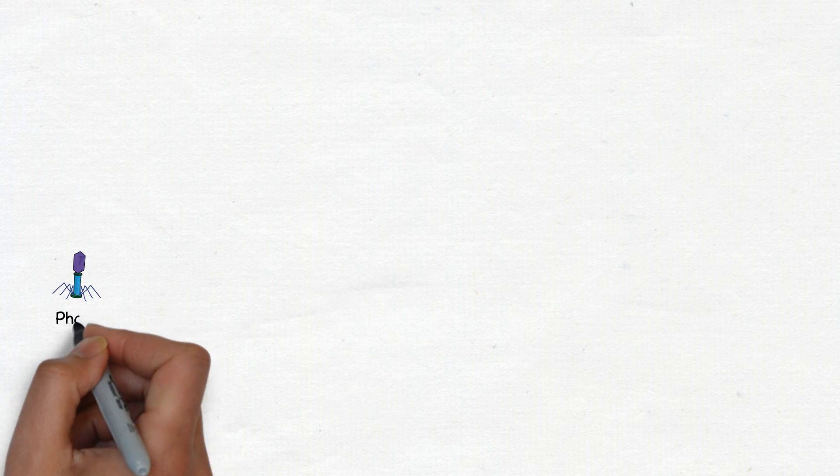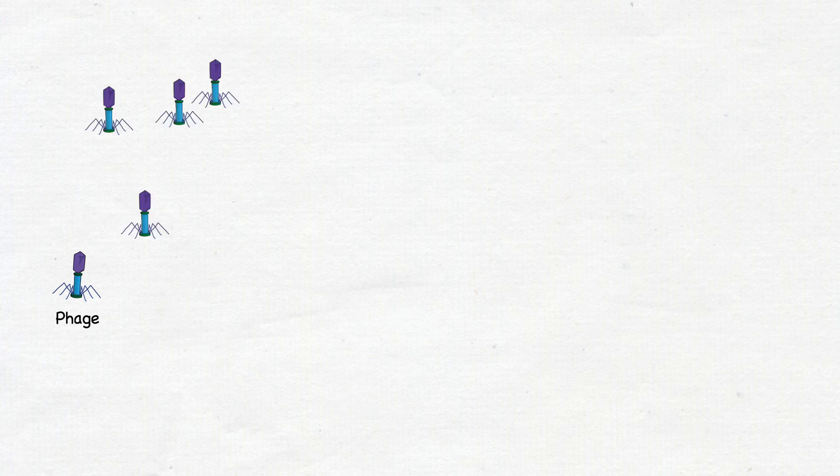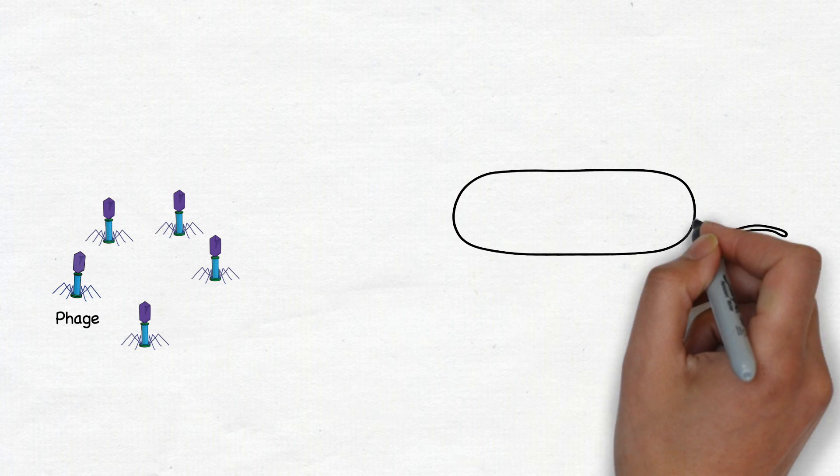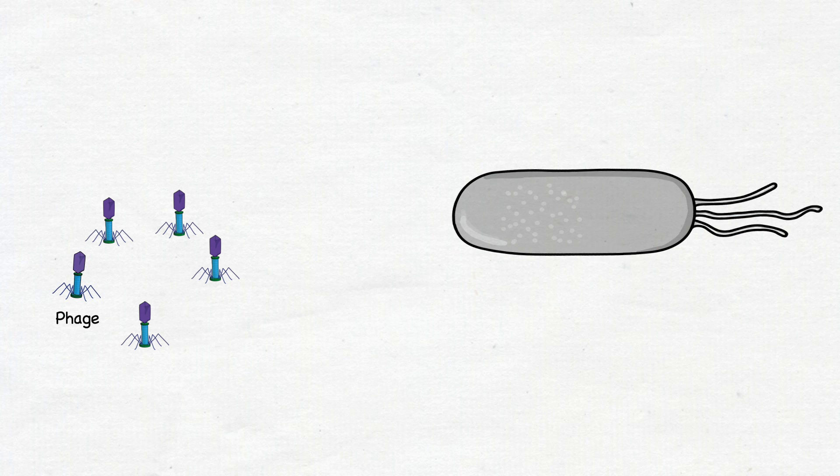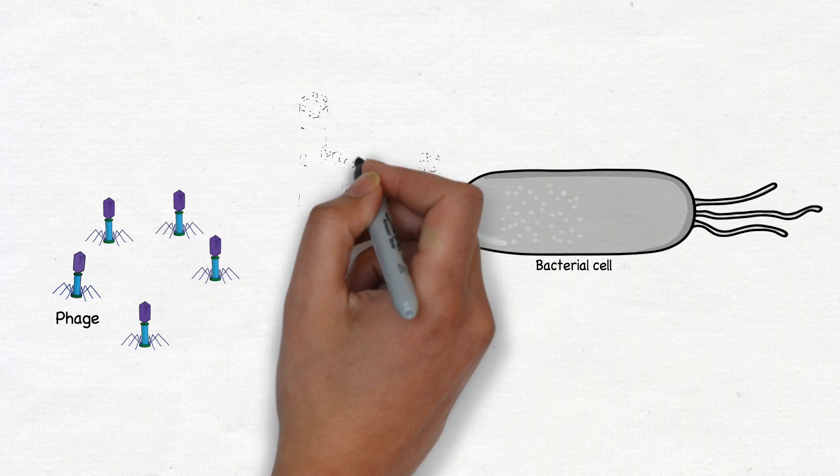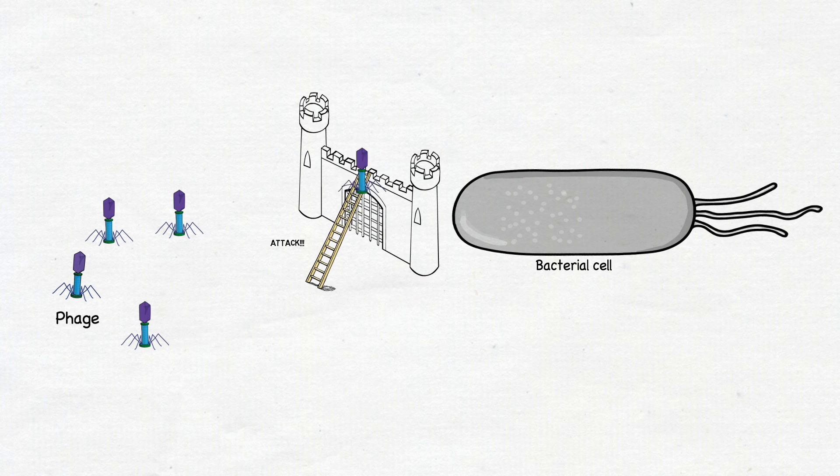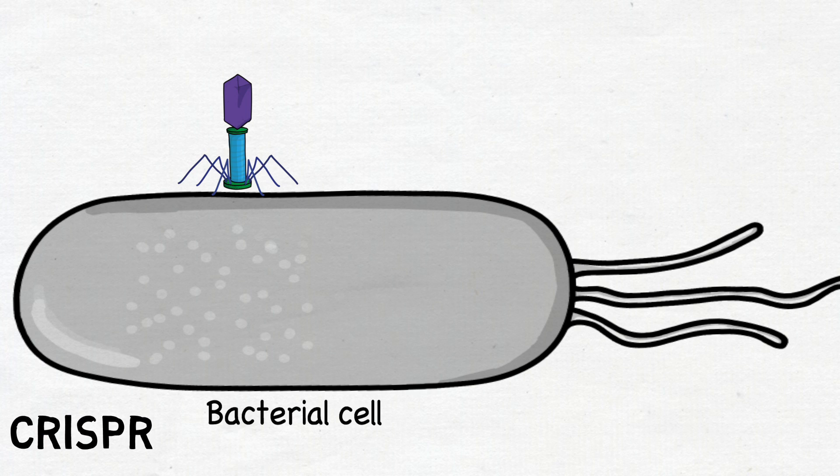To identify an off-switch for Cas9, we look to the viruses that kill bacteria, which are known as phages. Since phages are in constant battle with bacteria, they frequently evolve ways to outwit bacterial defense systems. One important bacterial defense system is provided by CRISPR.